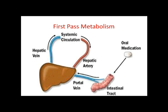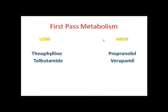Changes in GIT pH affect ionization and therefore absorption. Patients taking antacids raise gastric pH, which can reduce absorption of drugs that require acidic conditions. Food and disease also alter GIT pH, affecting how much of a drug becomes ionized and how much is ultimately absorbed.